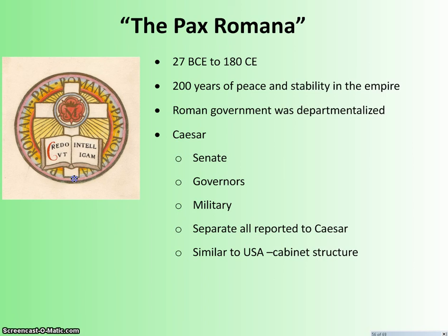Roman government is departmentalized. At the top you have the emperor. You have the Senate, which is no longer the main source of power, though Augustus tries to keep up the appearance. You have more power going out to governors of the different provinces as the empire grows. You have a strong military organized into legions — all separate from each other but all reporting to the emperor. It's set up very similarly to the United States cabinet structure, except the Senate serves as a kind of legislative piece, though in the U.S. that's a separate entity.